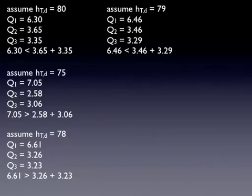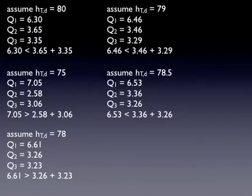Let's try 79. Not enough flow coming out. So let's go a little lower. 78.5. Still not enough flow coming out. Let's go a little bit lower.